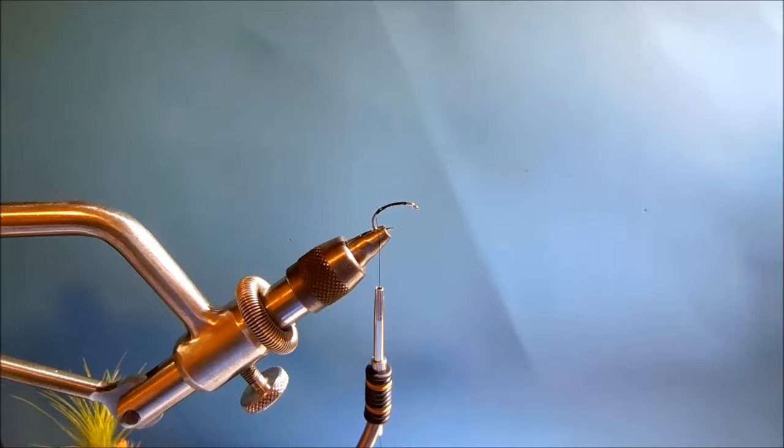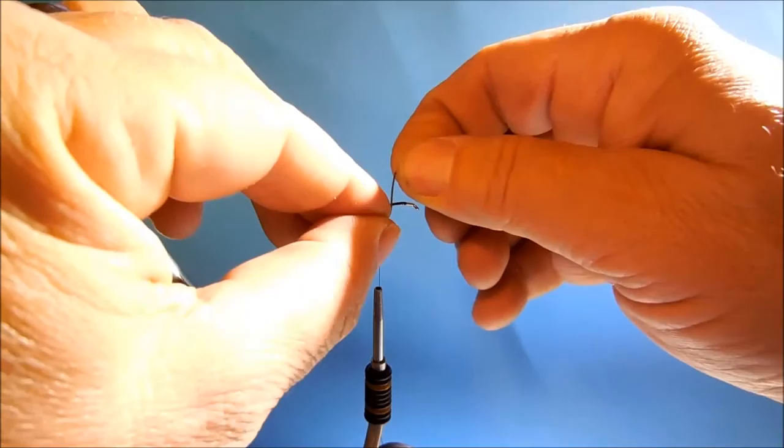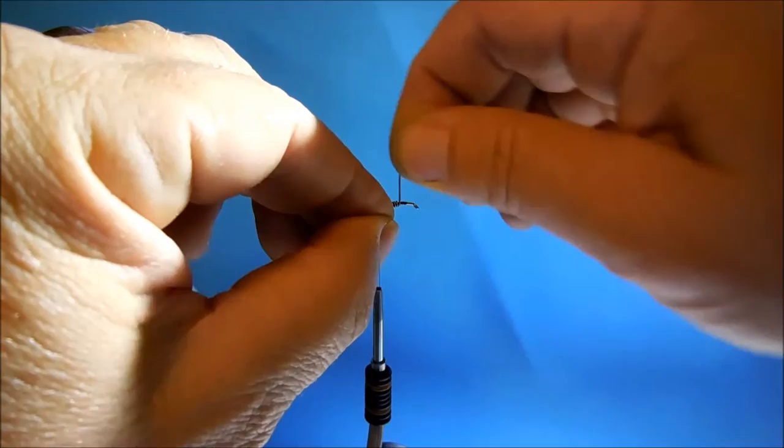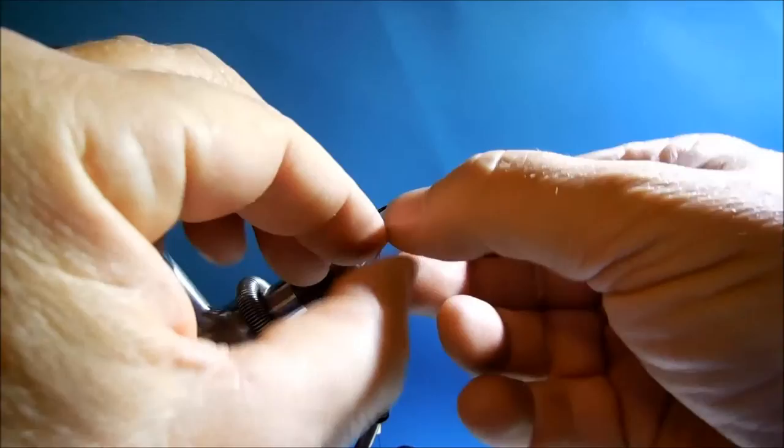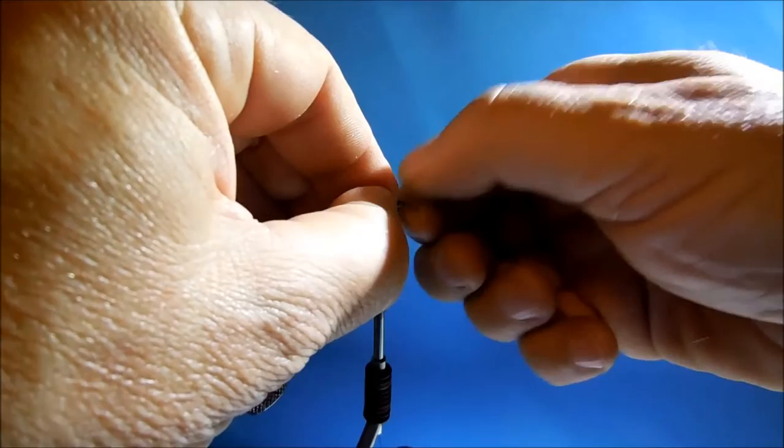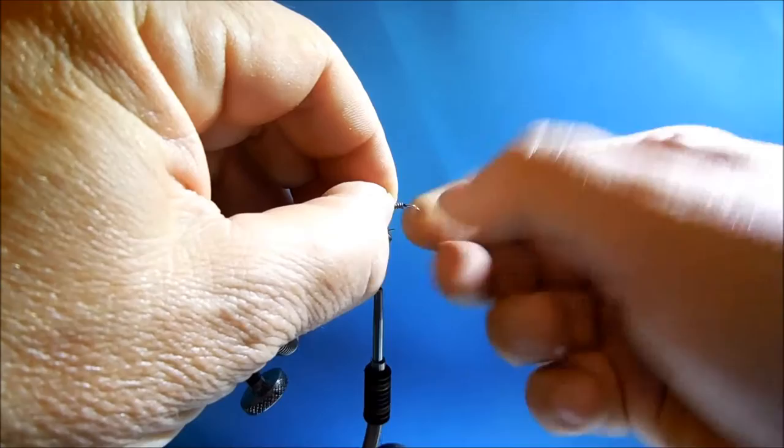Now we're going to add a little bit of weight. If I can find some. There we go. Use a little bit of lead weight, or lead free wire, as they use now. I'll just put about, I think five turns should be enough. Just to give it that little bit of extra weight to aid it to sink.